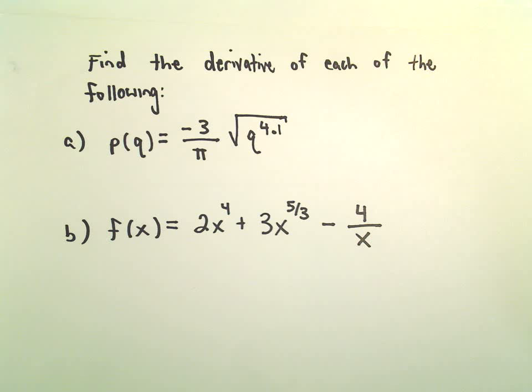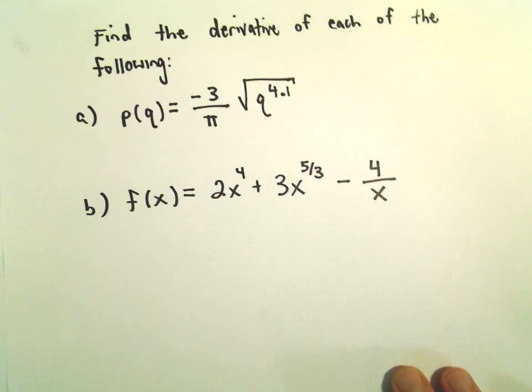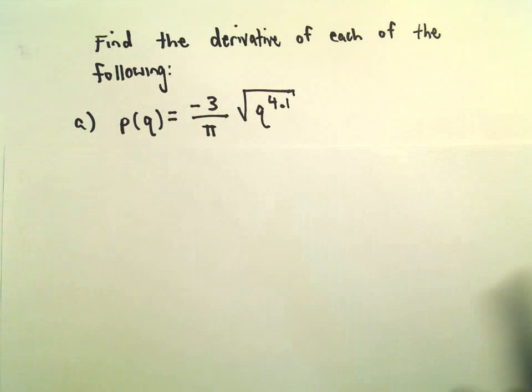And all I'm going to do in part A is I'm just going to rewrite this first. Anytime I see a square root or a radical in there, the first thing I always do is just try to rewrite this with no radical. It just is a power.